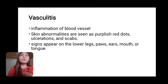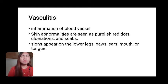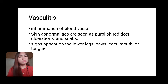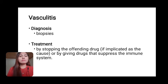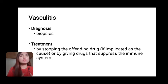Vasculitis is the inflammation of blood vessels and can cause immune complex disorders in dogs. Skin abnormalities appear as purplish-red dots, ulcerations, and scabs, with signs appearing on the lower legs, paws, ears, mouth, or tongue. Drugs are a frequent cause. Diagnosis is by biopsies only. Treatment involves stopping the offending drug if implicated, or giving drugs that suppress the immune system.